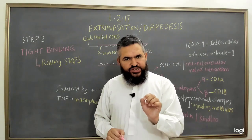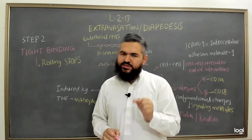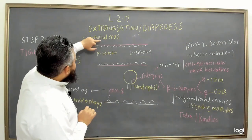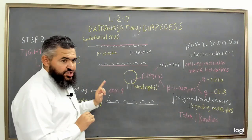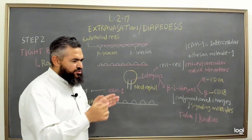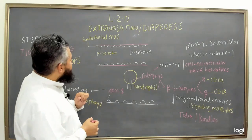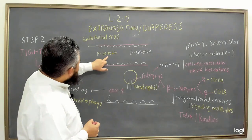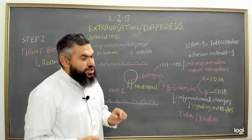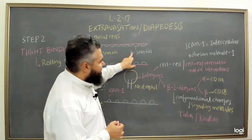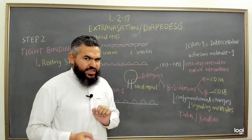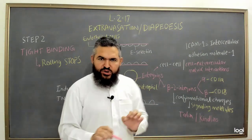Rolling adhesion is the weak attachment of immune cells like neutrophils to the endothelial cells of the blood vessel. When endothelial cells get activated by immune cells like macrophages, they produce cytokines like tumor necrosis factor. That tumor necrosis factor activates the endothelial cells, which then produce P-selectin and E-selectin. The glycoproteins present on neutrophils interact with these selectins, achieving rolling adhesion — the weak attachment of neutrophils to the endothelial cells.